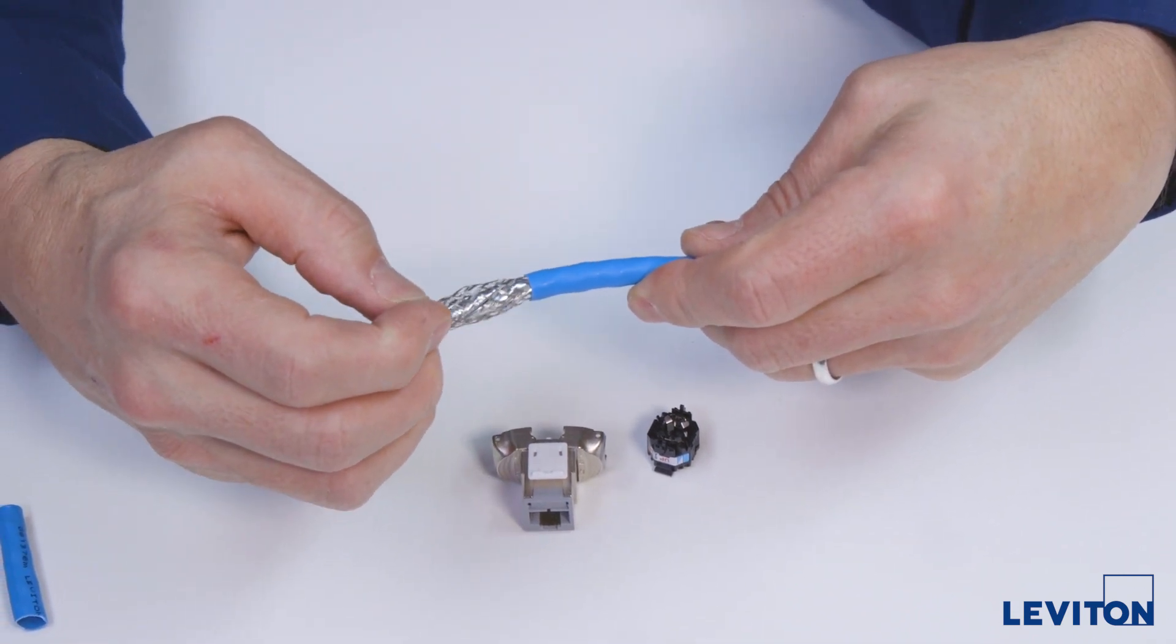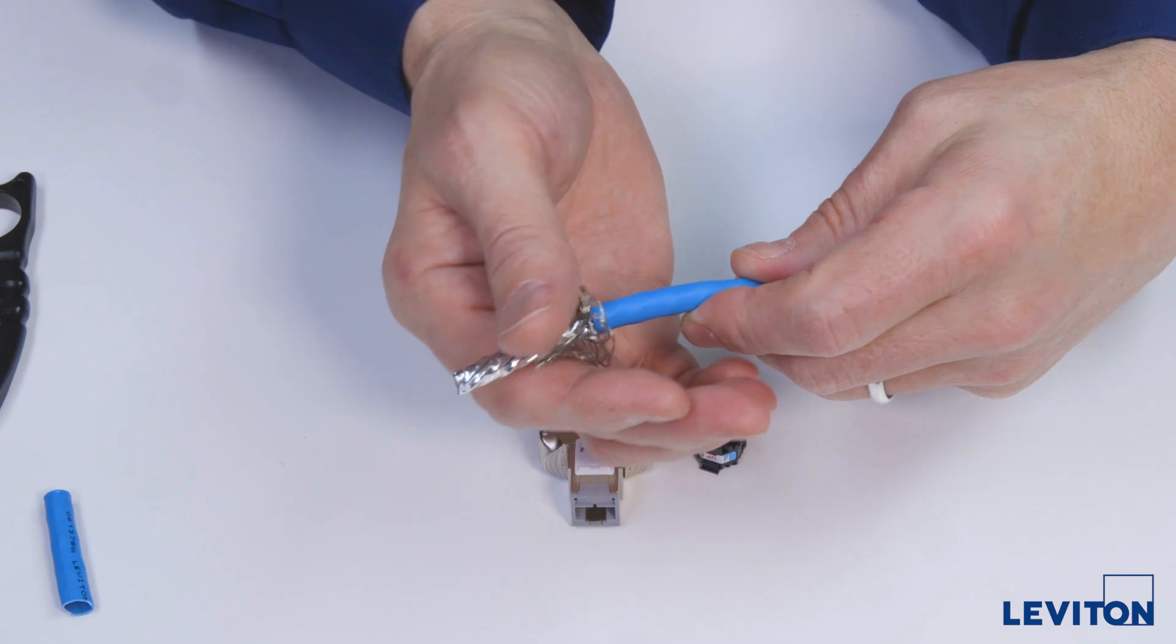Next, take the mesh braid and push it back and then dress it back along the cable jacket.